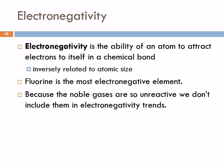We measure the attractiveness of an atom for an electron as electronegativity: the ability of an atom to attract electrons to itself in a chemical bond. This is going to be related to atomic size. There's a definite trend in the periodic table, and this is probably one of the more important trends to understand.